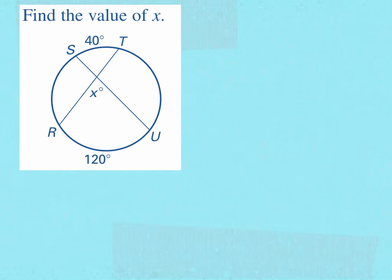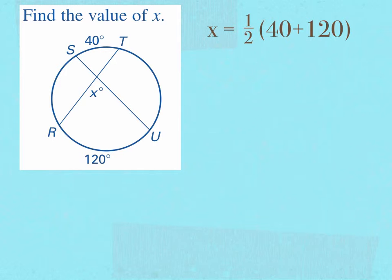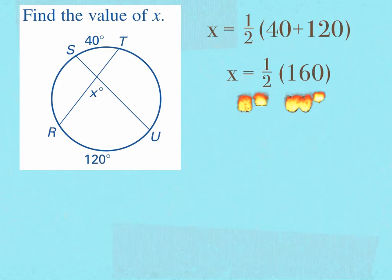An example of this theorem asks us to find the value of X. X is on the interior of my circle, and it is created by two chords that are intersecting. The intercepted arc from angle X is 120 degrees, and the arc intercepted by X's vertical angle measures 40 degrees. So to find X, I can take one-half the sum of 120 and 40. 40 plus 120 is 160, and half of 160 gives me 80 degrees for X.